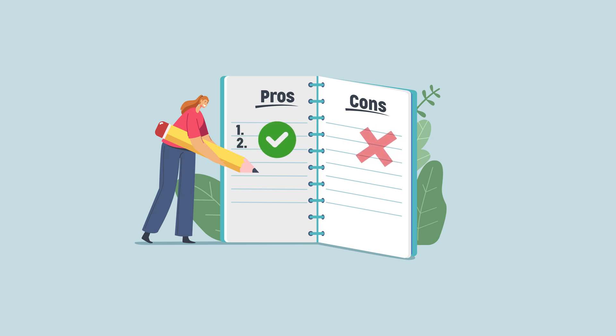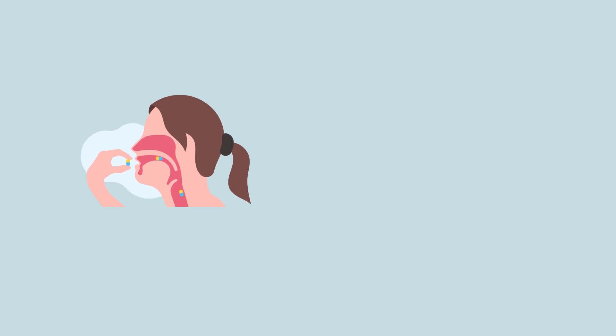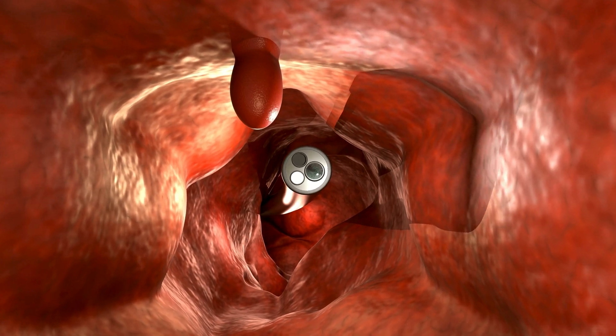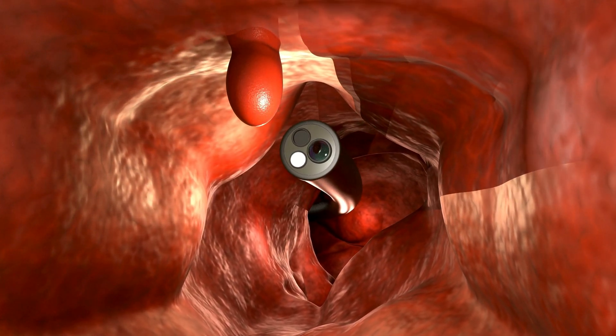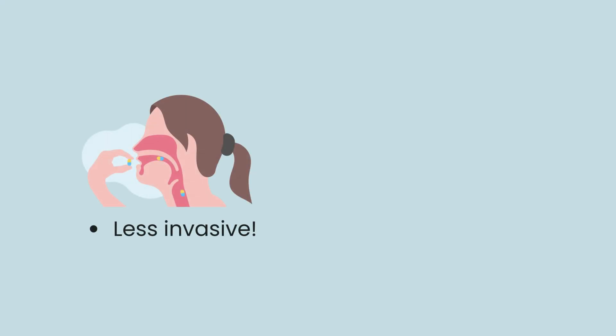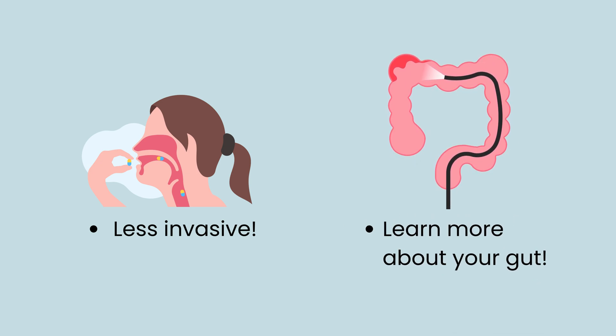There are benefits and drawbacks to each delivery method. For example, taking FMT by pills is the least invasive, but this will not work if you have trouble swallowing pills. Giving FMT by colonoscopy is more invasive, but it may also allow your health care team to find other problems such as inflammatory bowel disease or bowel cancer that they would not have been able to detect otherwise.